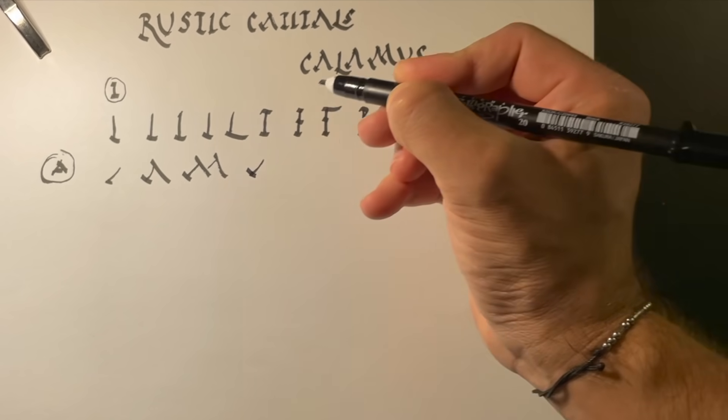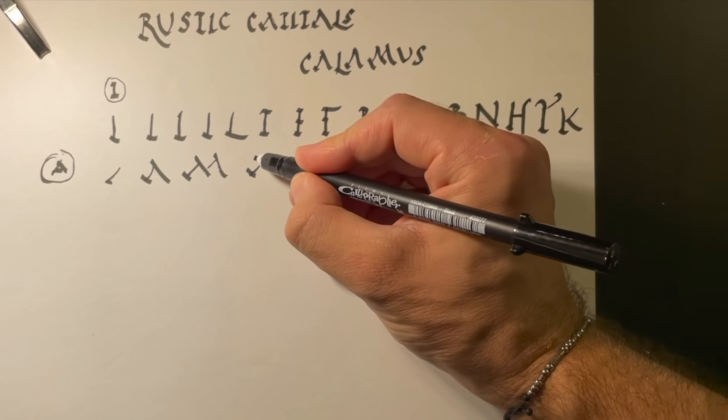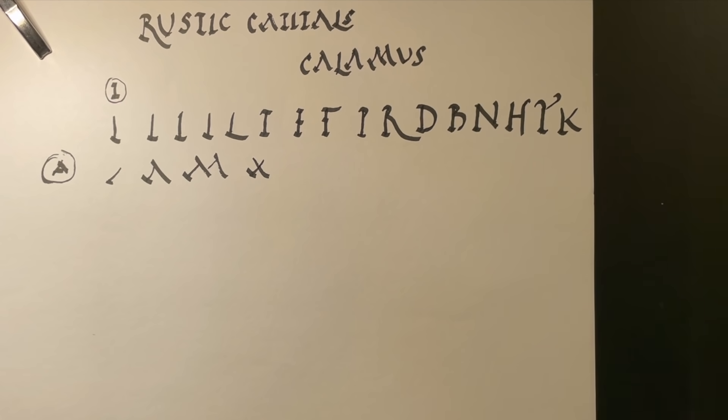Let's do another diagonal. And then if we cross it, we get an X. There's a lovely X.